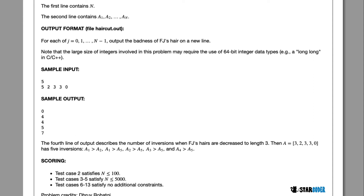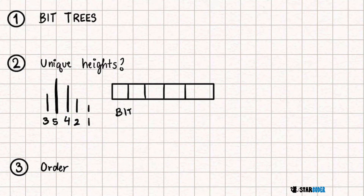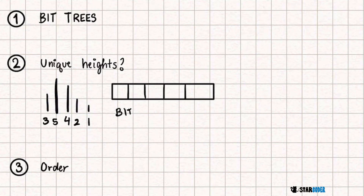Let's look at the algorithm for this question. There are two parts. The main way we are going to solve this is using BIT trees. We can assume that all of the hairs on Farmer John's head have unique different lengths.